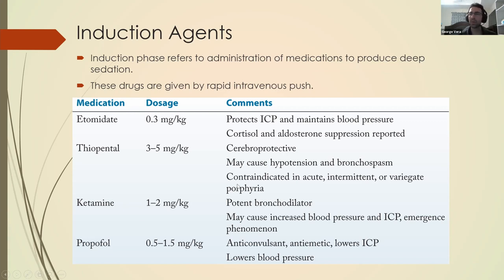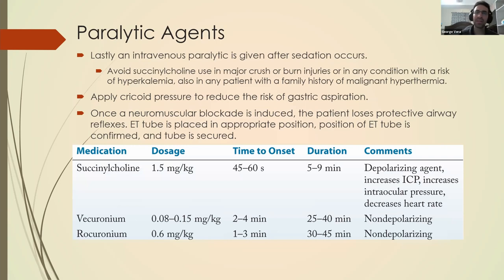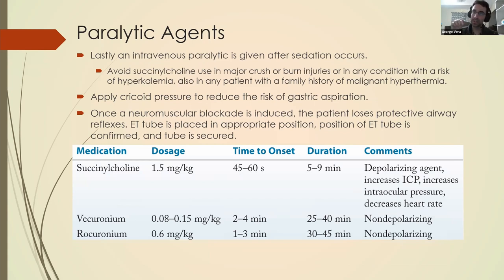Paralytic agents are given after sedation occurs. You will be applying cricoid pressure to reduce the risk of gastric aspiration. Paralytic agents make the muscles of the laryngeal airway floppy — they will be essentially flaccid, so when you insert the tube the hope is that you prevent any laryngeal or tracheal damage. It should also make it easier for the airway tube to slide through. Succinylcholine is certainly one of the medications that can be used along with vecuronium and rocuronium.